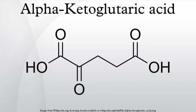Another function is to combine with nitrogen released in the cell, therefore preventing nitrogen overload. Alpha-ketoglutarate is one of the most important nitrogen transporters in metabolic pathways. The amino groups of amino acids are attached to it and carried to the liver where the urea cycle takes place. Alpha-ketoglutarate is transaminated, along with glutamine, to form the excitatory neurotransmitter glutamate, which can then be decarboxylated into the inhibitory neurotransmitter GABA.